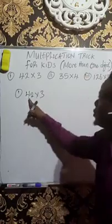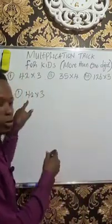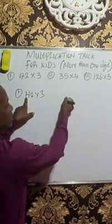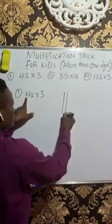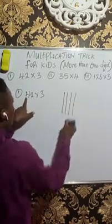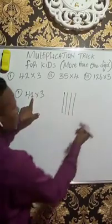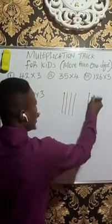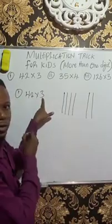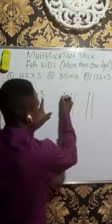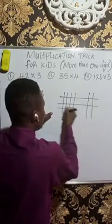42 times 3. The digit here is 42. So what you've got to do is draw 4 lines for 4: 1, 2, 3, 4. And the next digit is 2, so give a space and draw 2 lines: 1, 2. We are multiplying by 3, so horizontally draw 3 lines: 1, 2, 3.